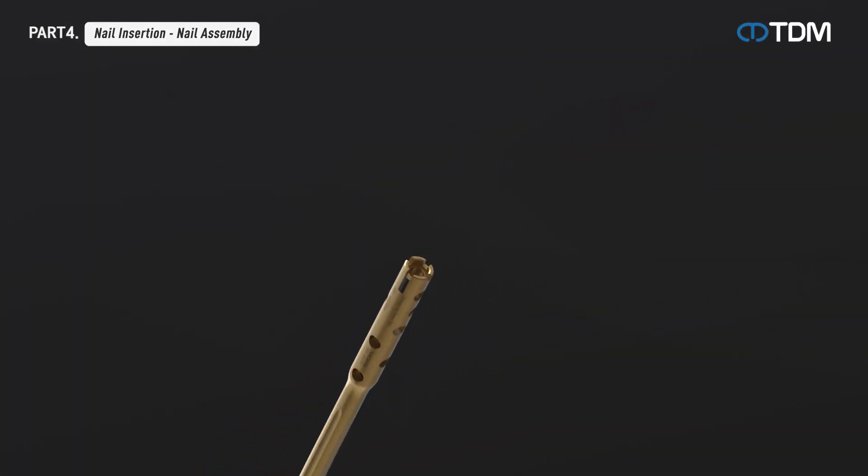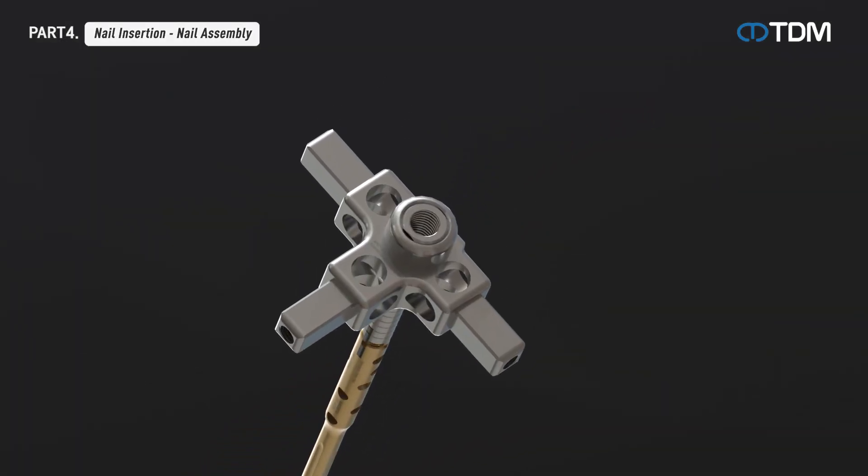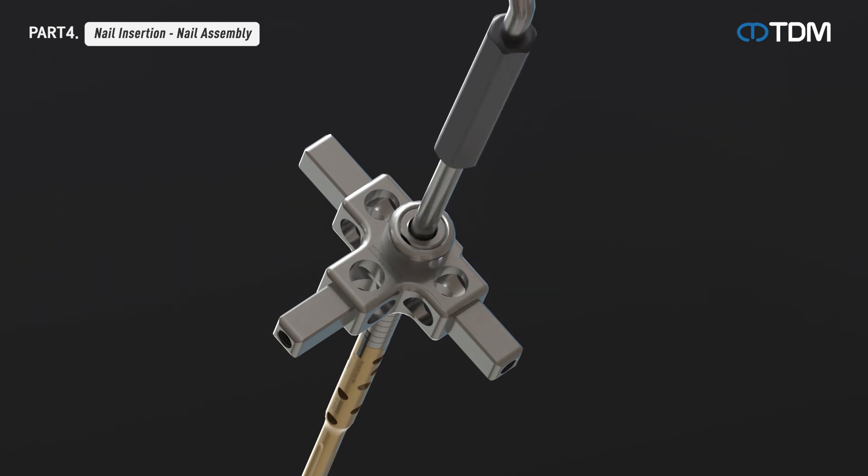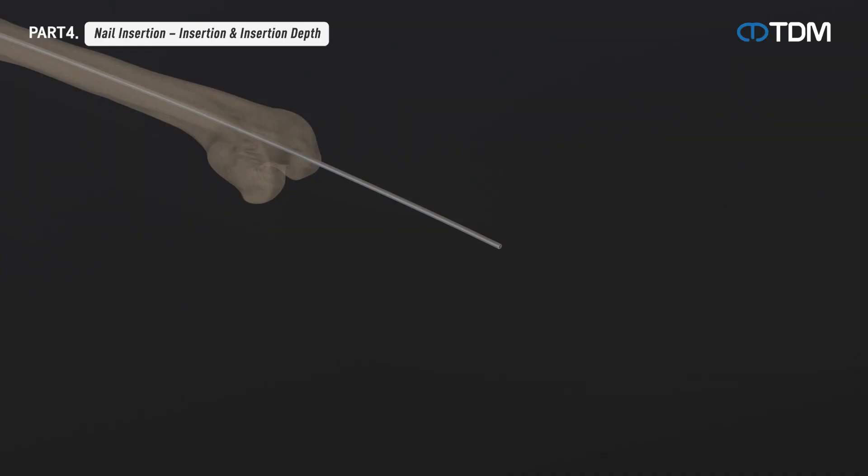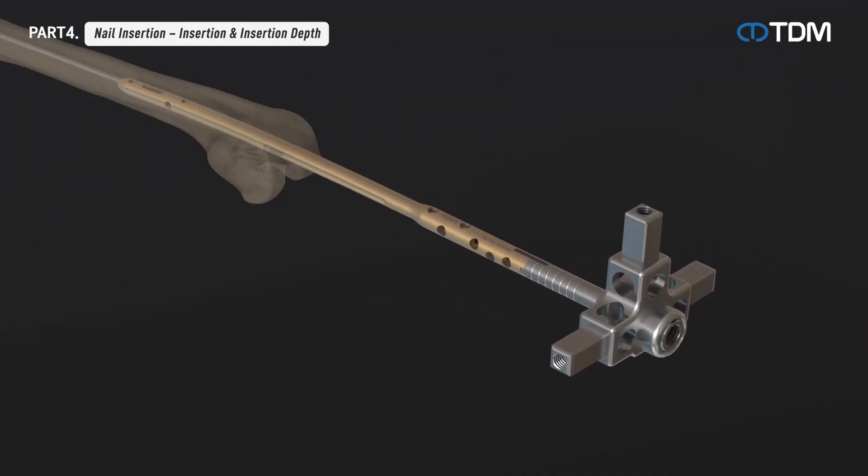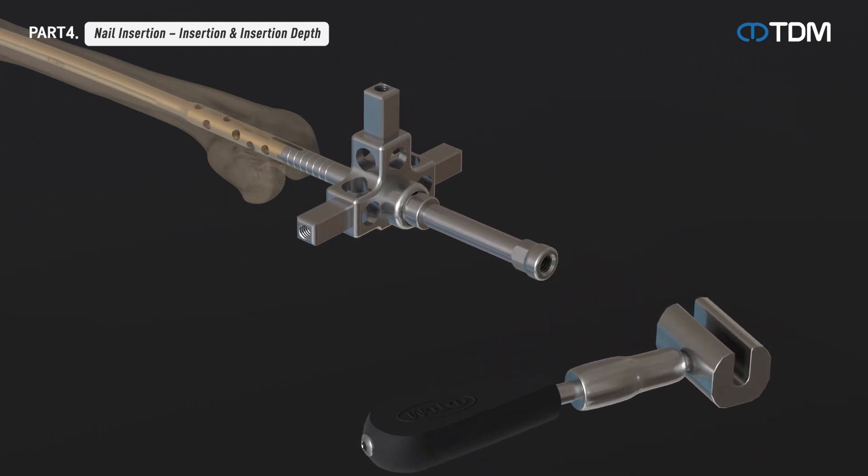Prepare a nail of appropriate length. Check the bending direction of the nail and combine the nail and the assembly handle in the correct direction with an assembly bolt. When the nail and assembly handle are combined, insert the nail along the reaming rod. Attach the impact handle to the assembly handle as necessary. Use light controlled hammer blows to seat the nail and insert it into the desired position.